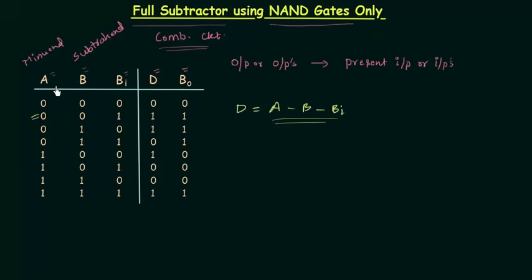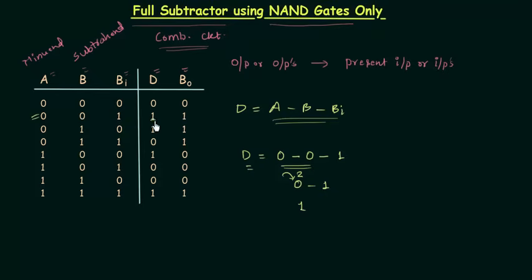For example, in the second case when a equals zero, b equals zero, and b-i equals one, we have difference equal to zero minus zero minus one. Zero minus zero equals zero, so we have zero minus one. Since one is greater than zero, we need to take a borrow, which equals two. Two minus one equals one, so the difference is one, and since there is a borrow involved, the borrow output is also one.